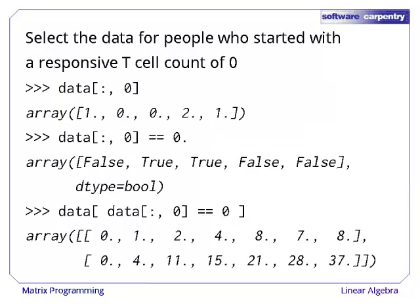It might be even more interesting to look at what happened to people who started with no responsive T cell count at all. The first step is to select the first column of data, the initial T cell counts for each patient. If we compare these to zero,